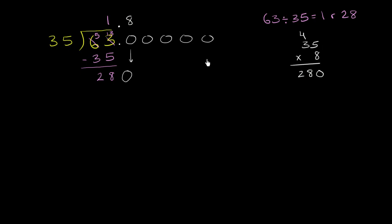8 times 35 is exactly 280. And we don't have any remainder now. So we don't have to bring down any more of these zeros. So now we know exactly that 63 divided by 35 is equal to exactly 1.8.